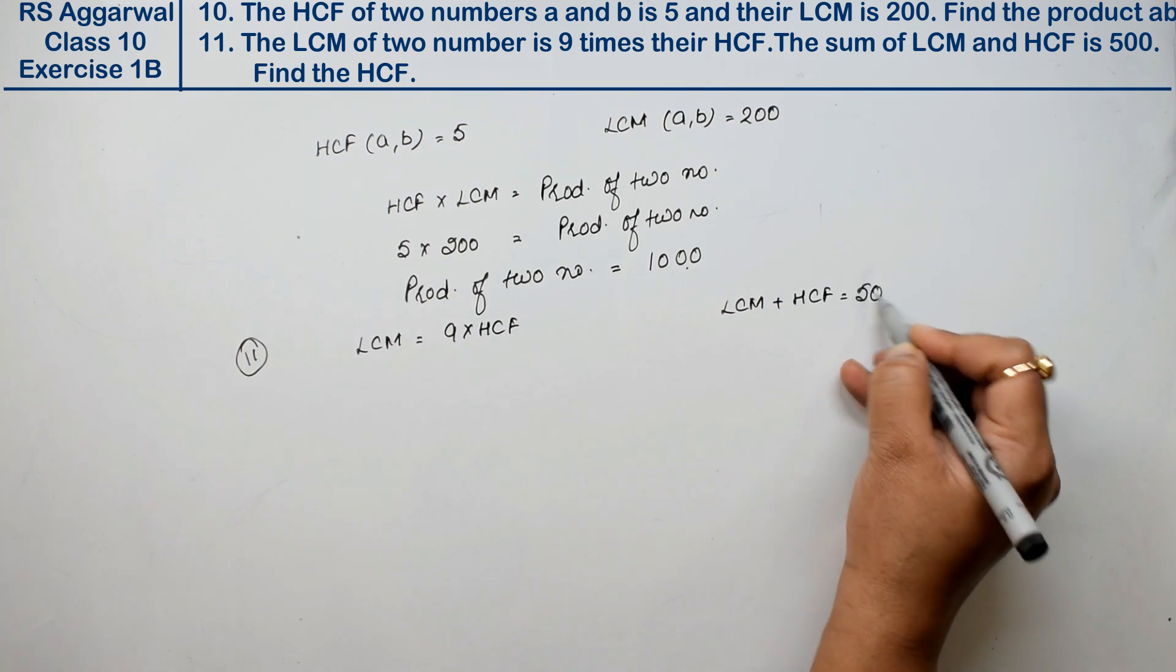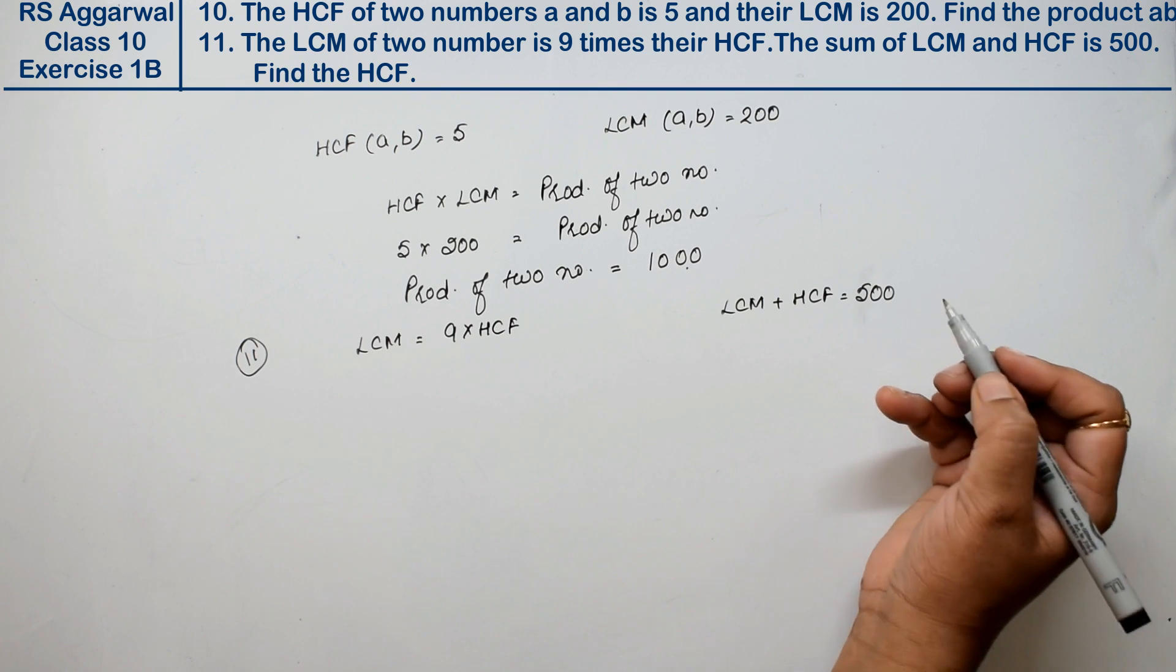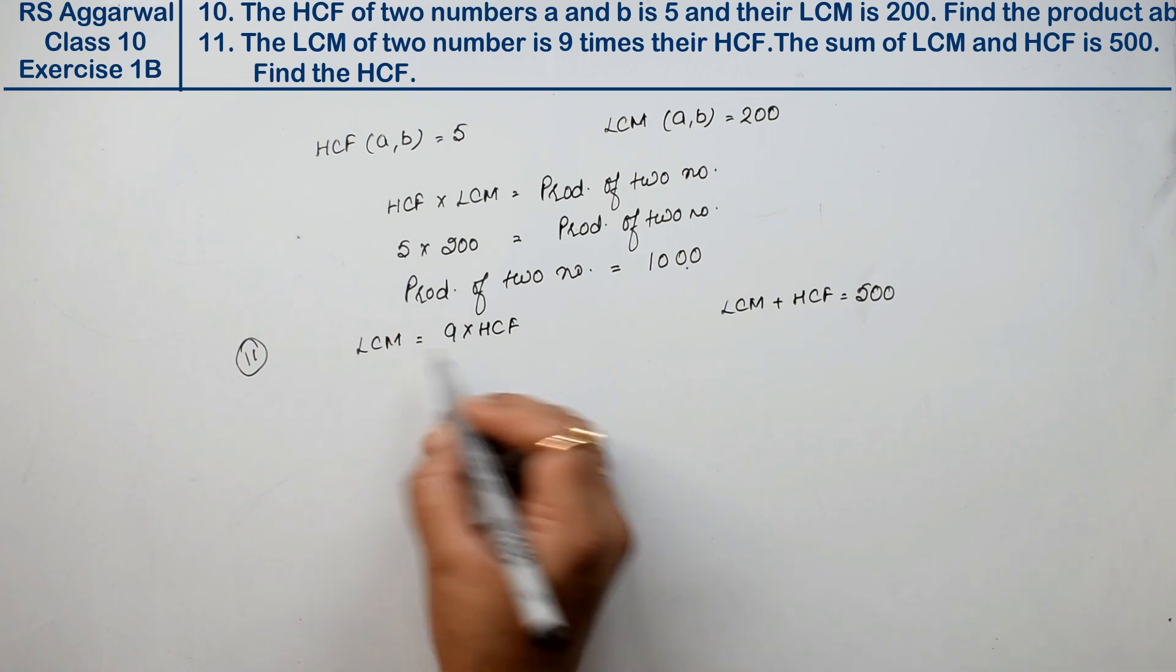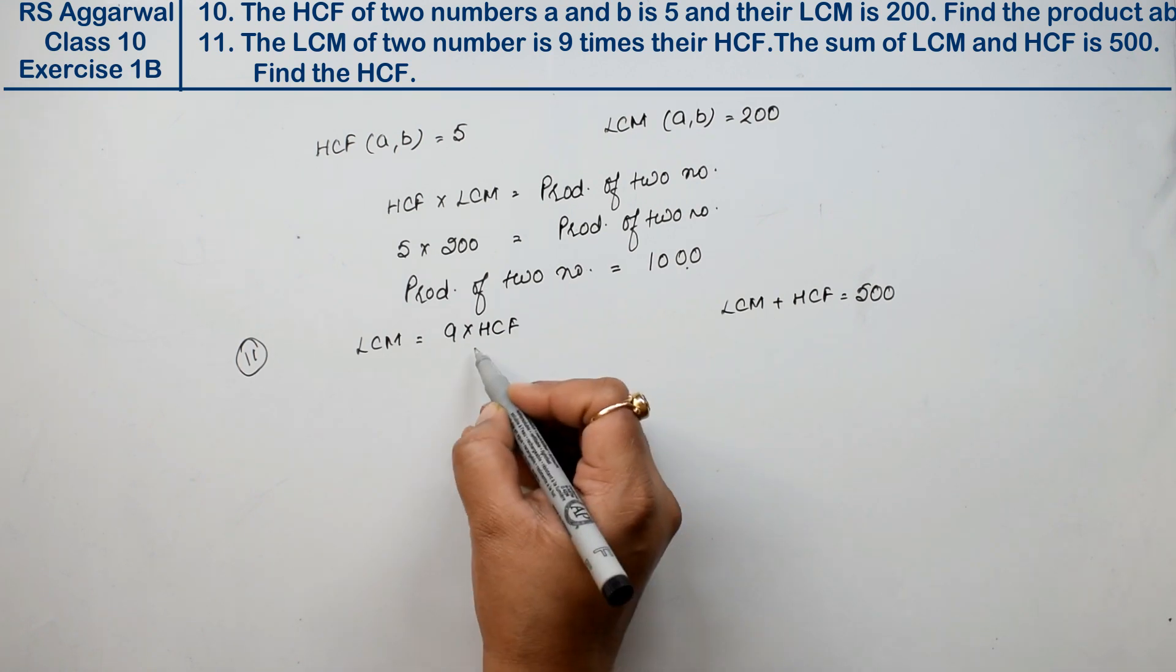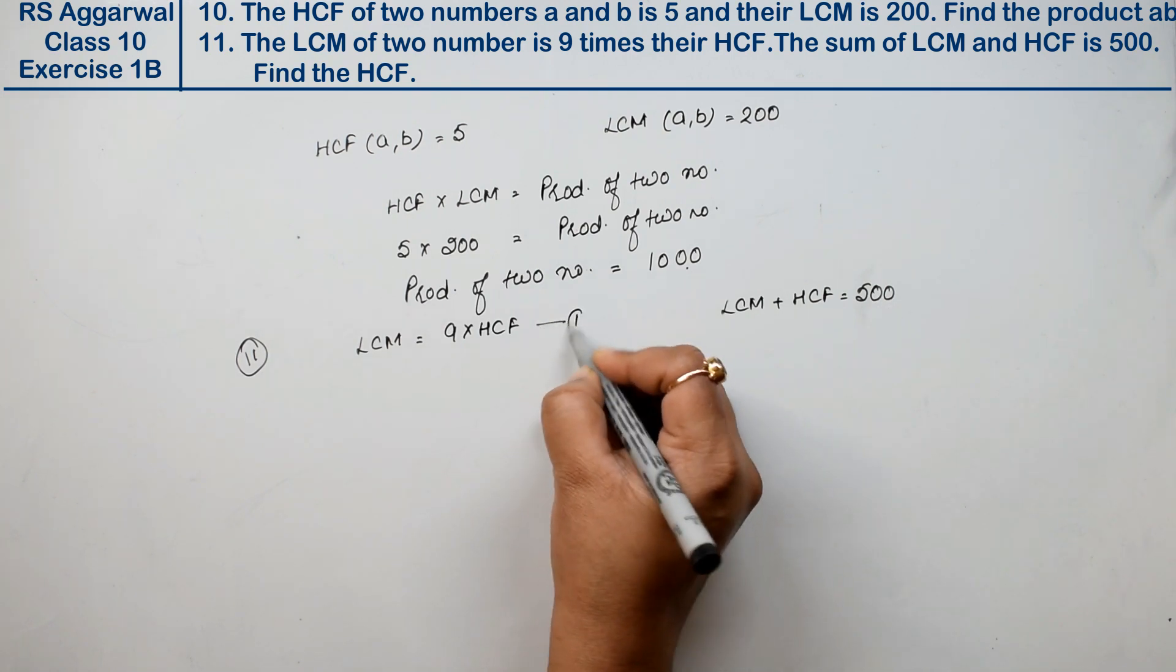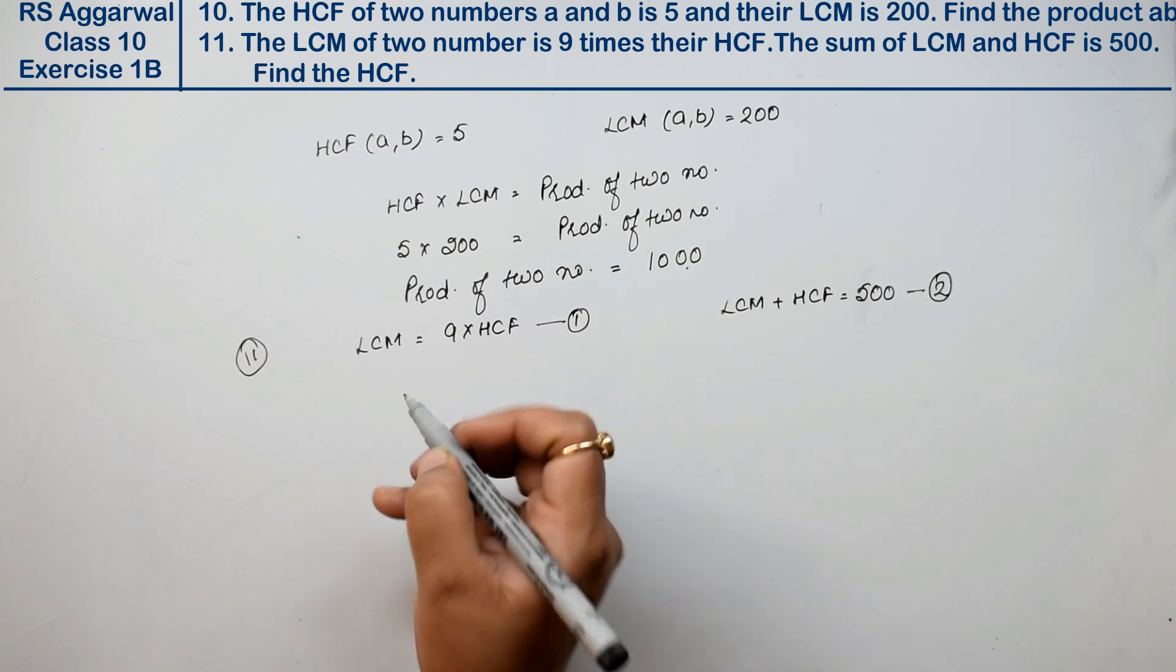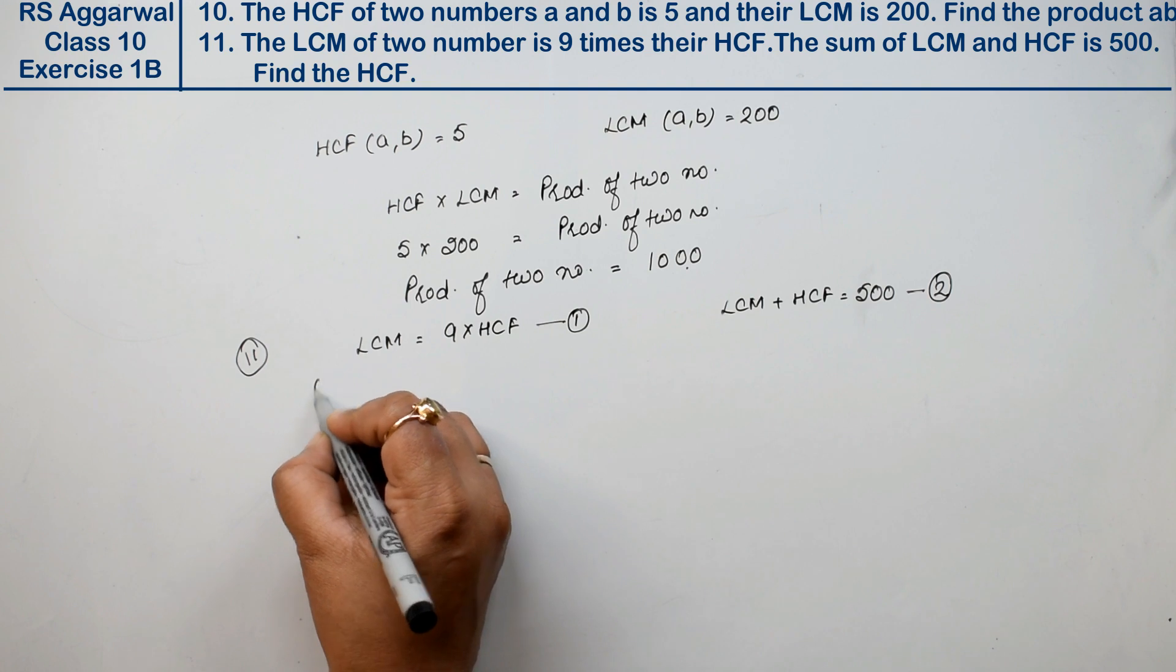So we need to find the HCF. How will we find it? Either put LCM's value in this equation or put this value in that equation. If we take this as first and this as second, we'll put the value of LCM from equation first to equation second.